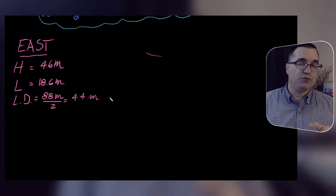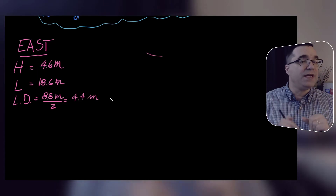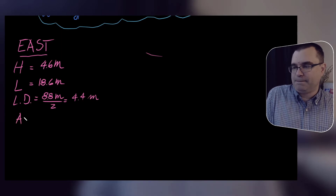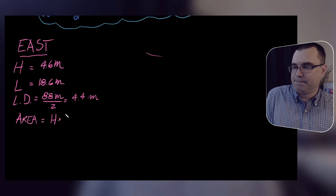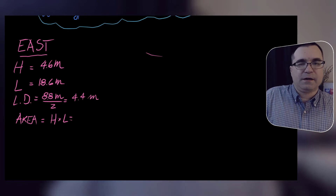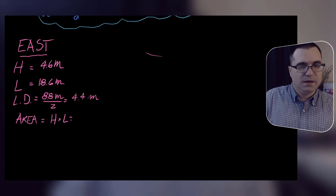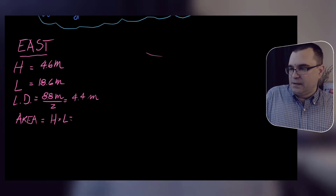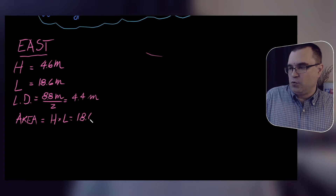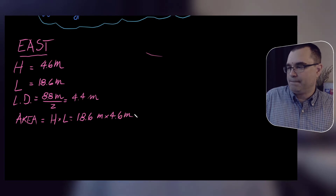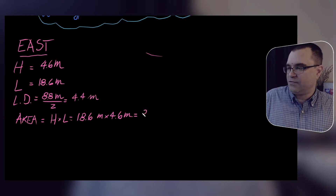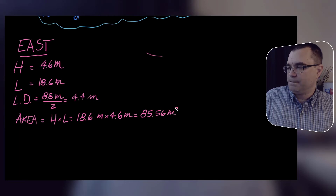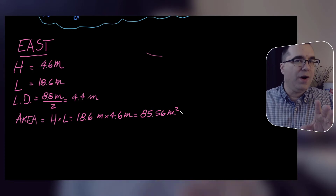Now we're going to use H and L to find the area of the east face and the ratios for the east face. Area equals H times L, which in our case is 18.6 meters times 4.6 meters, equals 85.56 meters squared.